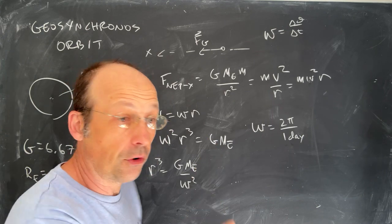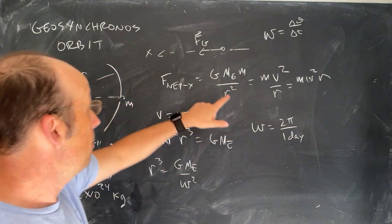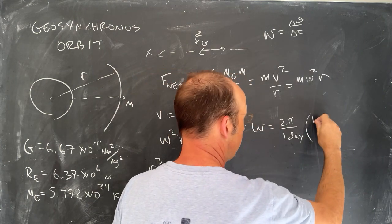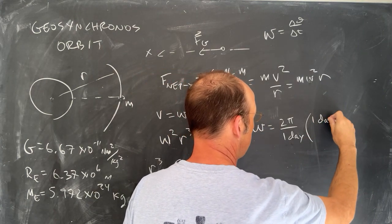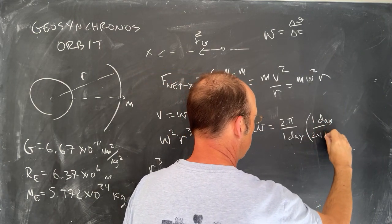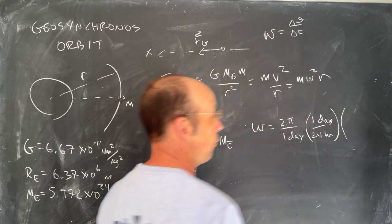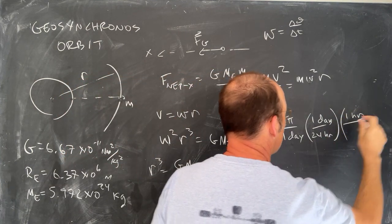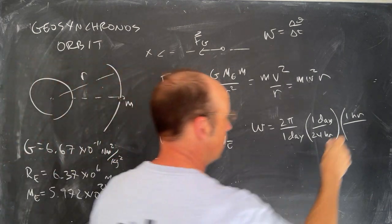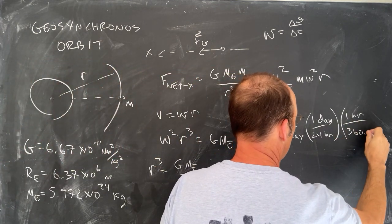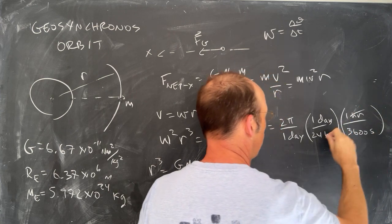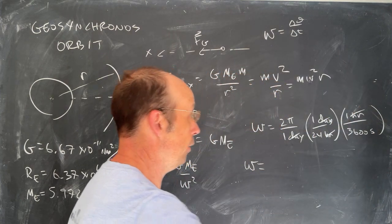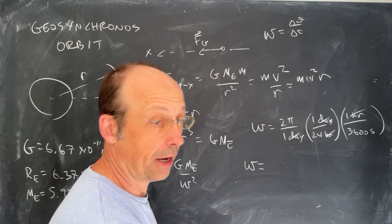Okay, so now I need to convert days to seconds because my G and r's are in meters and seconds. Well, I can say one day is 24 hours, and then I can convert hours to 3,600 seconds. One hour is 60 minutes times 60 seconds. So that's 3,600 seconds. The hours cancel, days cancel, and I get omega. Let's go ahead and calculate our value for omega. It does come up every once in a while.